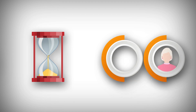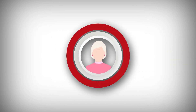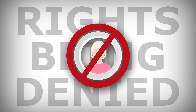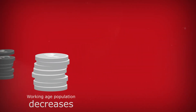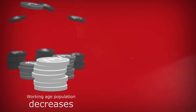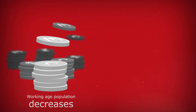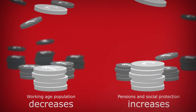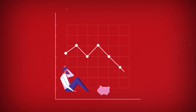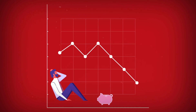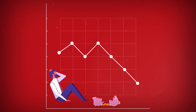Older women live longer than men and have specific needs. In many contexts, the rights of older women are being denied, creating a source of injustice. As the working age population decreases, there is a simultaneous rise in demand for pensions and social protection. Increased demands from older generations may strain relationships with younger generations, who may feel burdened by these changes, affecting the intergenerational compact.